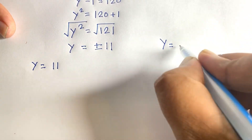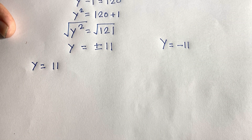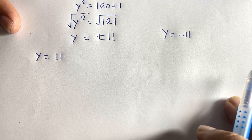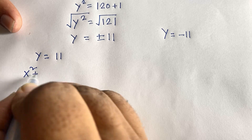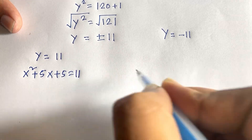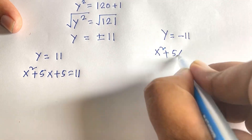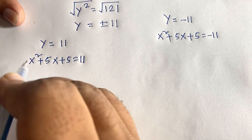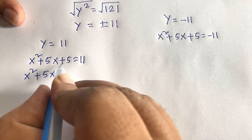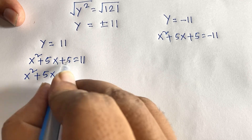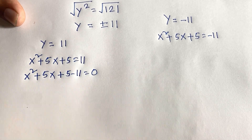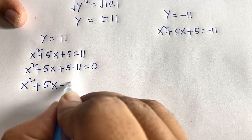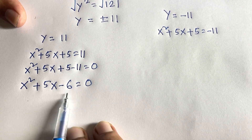Remember that y = x² + 5x + 5. For the case y = 11: x² + 5x + 5 = 11, which gives x² + 5x + 5 - 11 = 0, so x² + 5x - 6 = 0. This is a quadratic equation. Using the middle-term factoring method, I split 5x as 6x - x.